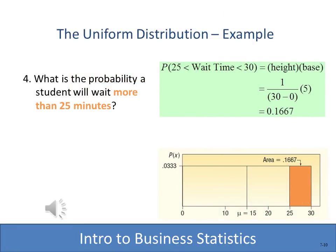Now we want to answer the question: what is the probability that a student will wait more than 25 minutes? With the uniform distribution, we look only at the area between 25 and 30, which is five units. The probability of each minute is 0.3333, and we multiply that by five — or 1 divided by 30 minus 0, times 5 — giving a probability of 0.1667.